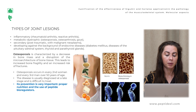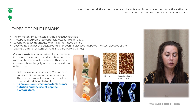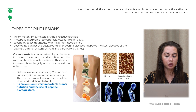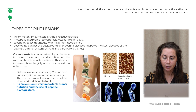The first is osteoporosis. It is characterized by the decrease in bone mass and disruption of the microarchitecture of bone tissue. This leads to increased bone fragility and increased risk of fracture. Osteoporosis occurs in every third woman and every third man over 50 years old. The disease is usually diagnosed at a late stage and is difficult to treat. Its prevention is very important, including proper nutrition and the use of peptide bioregulators.